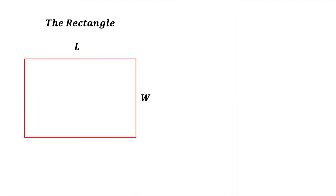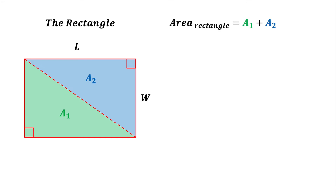We next consider a rectangle with length L and width W. First let's divide the rectangle into two right-angled triangles as shown. This also gives us two areas a1 and a2. Again we can see that the area of the rectangle is the sum of the triangular areas a1 and a2. However this time the base of each triangle equals the length of the rectangle and the height of each triangle equals the width of the rectangle.